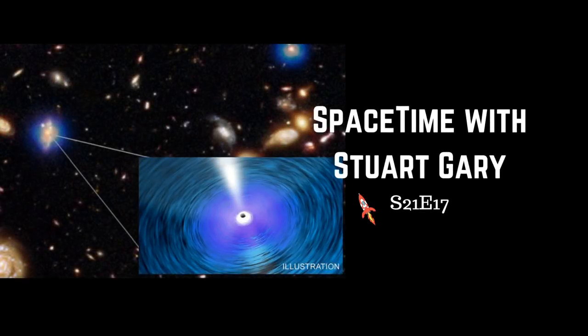This is Spacetime Series 21, Episode 17, coming up on Spacetime. One of the most massive black holes ever seen, and the ExoMars Trace Gas Orbiter completes aerobraking around the Red Planet. All that and more coming up on Spacetime. Welcome to Spacetime with Stuart Gary.